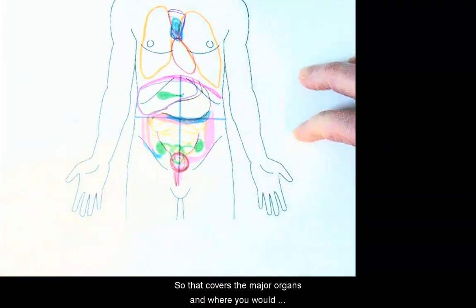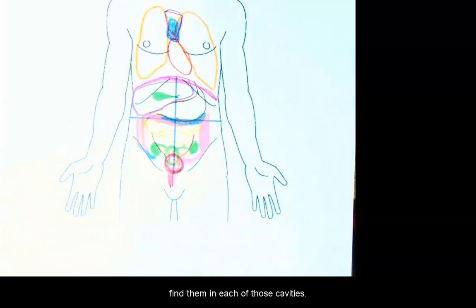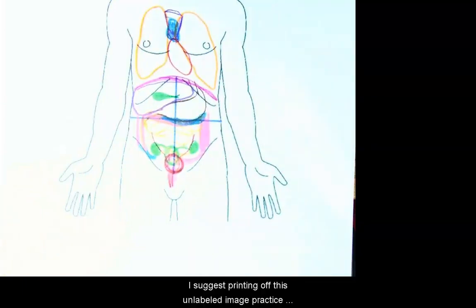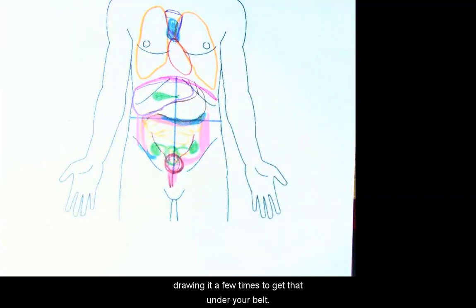So that covers the major organs and where you would find them in each of those cavities. I suggest printing off this unlabeled image, practice drawing it a few times to get that under your belt.